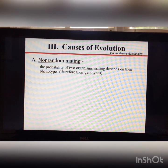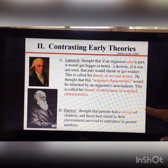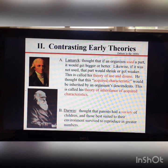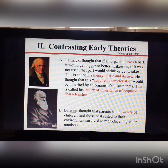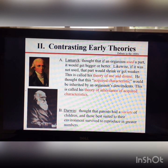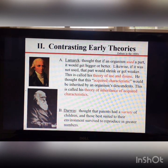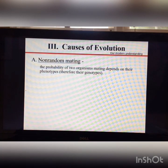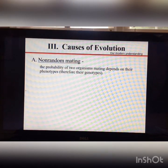Now let's talk about our modern understanding of the causes of evolution, starting with the variation Darwin discussed. Darwin's theory of natural selection has great merit, but he didn't know where genetic variation came from. We now know it comes from mutation, random assortment of homologous chromosomes, crossing over, and random fertilization.